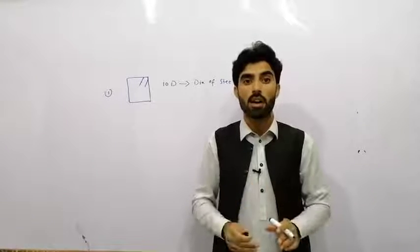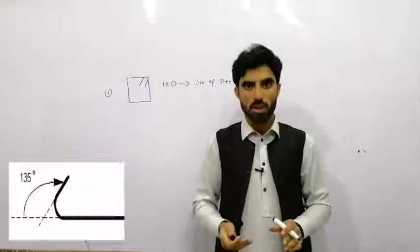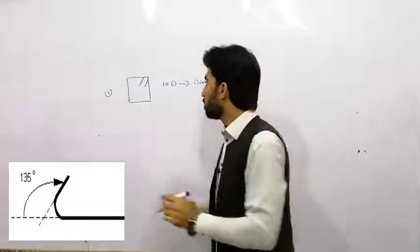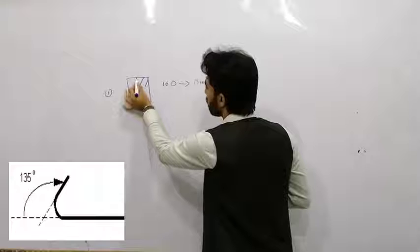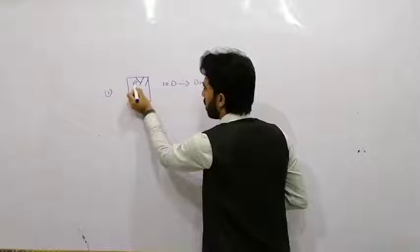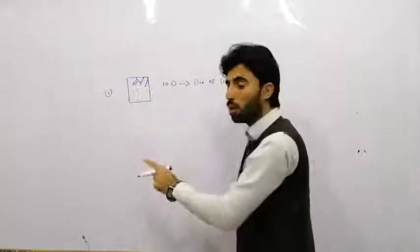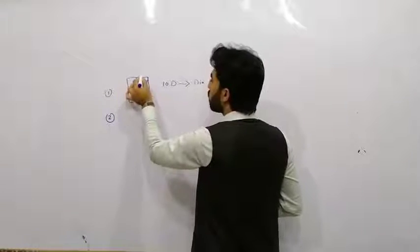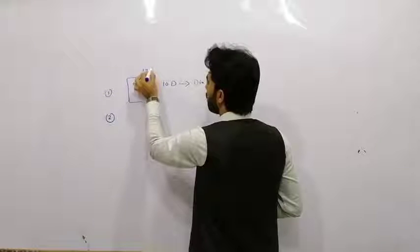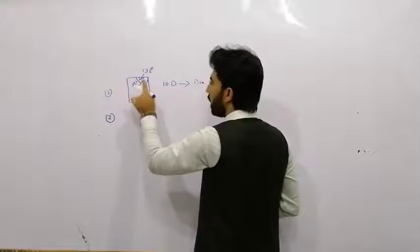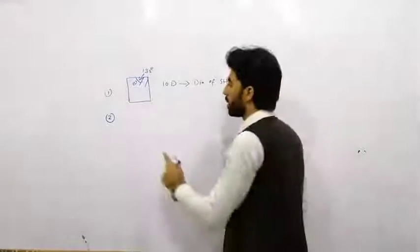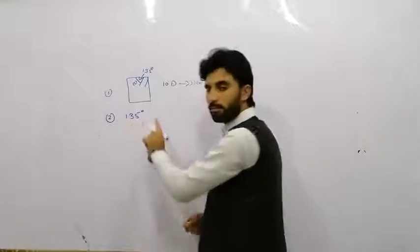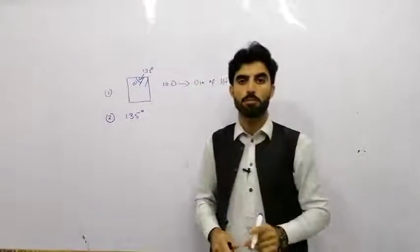The second question is: at what angle should hooks be bent? The answer is that hooks should be bent at 135 degrees. This is a very important question and is frequently asked in interviews.